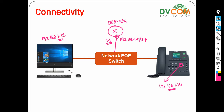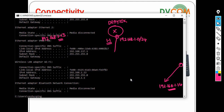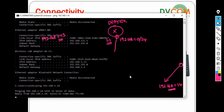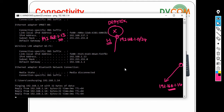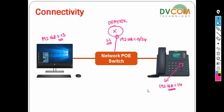Now my PC and my IP phone are both on the same network. To check reachability, open command prompt on your PC and type ping 192.168.1.14. You can see there is successful reachability. That is the first step — before you upgrade the firmware, make sure your PC can communicate with your phone.